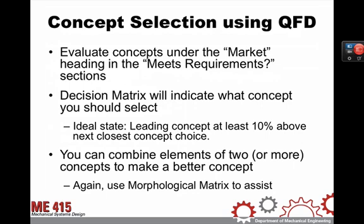For concept selection using quality function deployment and the tool in the Demadvert notebook, we're going to use a particular region of the house of quality under the area identified as market, and beneath that we'll see 'meets requirements.' The decision matrix is right under that, and that data will help you tell which of your concepts is meeting the most critical customer requirements. Ideally, one concept will stand out above the rest by showing at least a 10% higher ranking value than the remainder of the concepts.